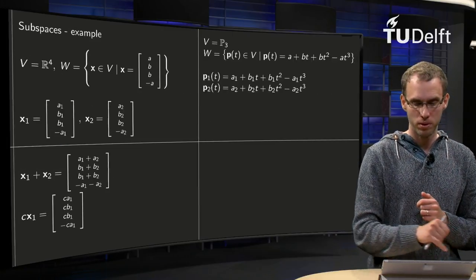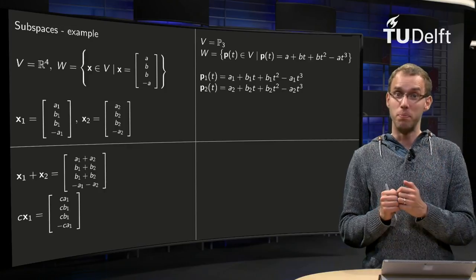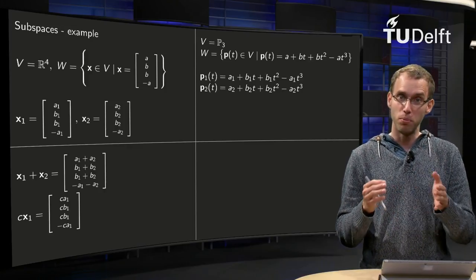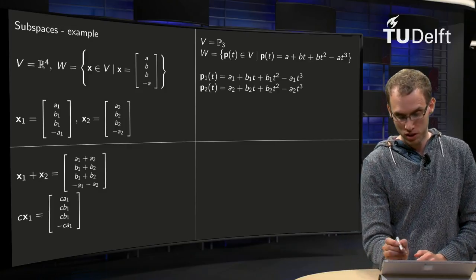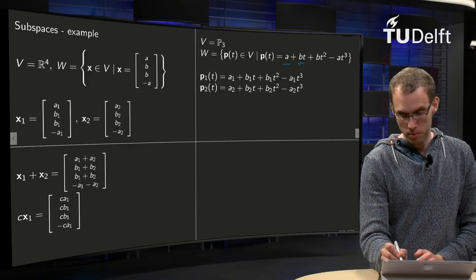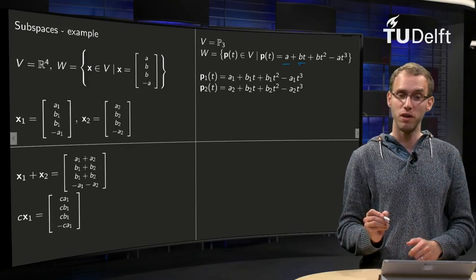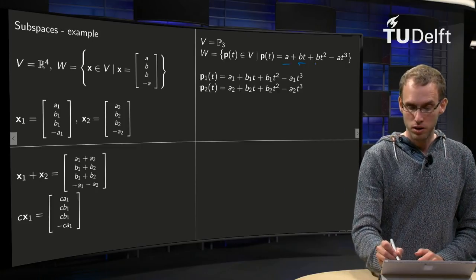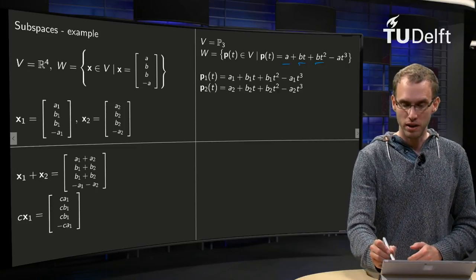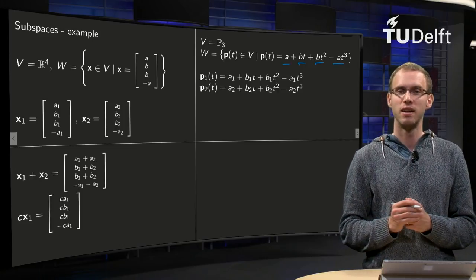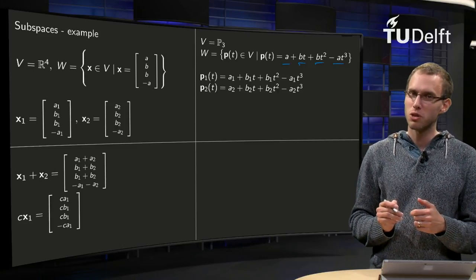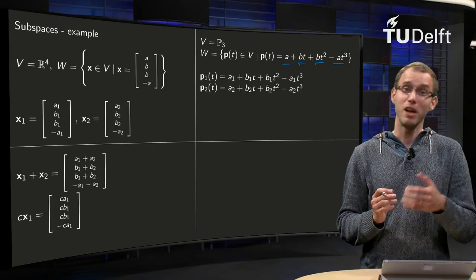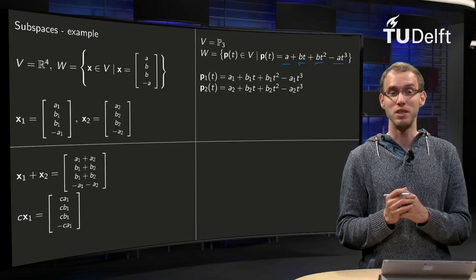Second example. V is now P3, and W is the set of all polynomials with the form A + B·t + B·t² - A·t³, where you can freely choose A and B, but once chosen, the t² coefficient is also B and the t³ coefficient is -A. That looks quite the same as the previous example — let's see whether this is also a subspace.